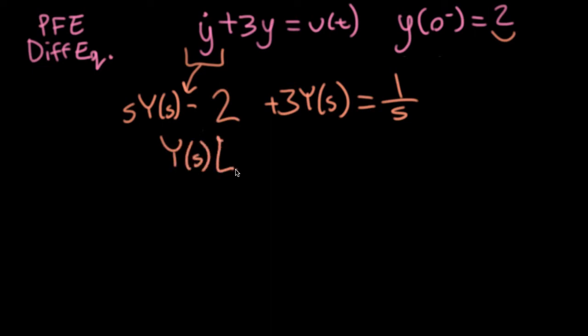All right, so what I'm going to do is I'm going to lump everything with a capital Y on it together on the left-hand side and factor out that capital Y(s). And then I'm going to move everything that doesn't have a capital Y in it over to the right-hand side. So I'll now have 2 plus 1 over s.